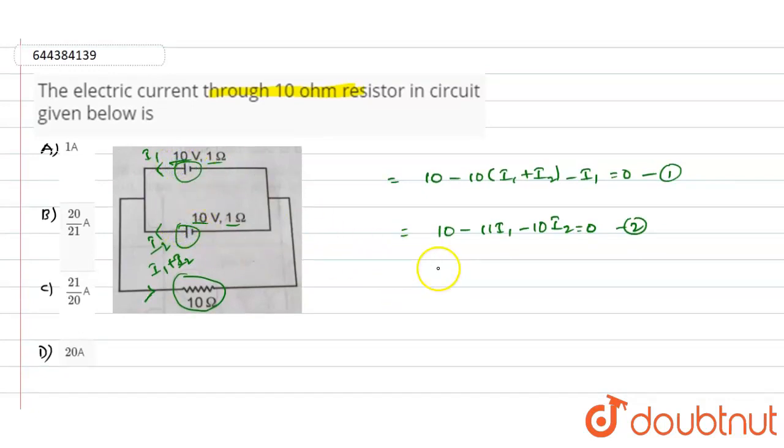Now I am considering the lower cell. Due to the lower cell we can write two equations again which is 10 minus 10 into (i1 plus i2) minus i2, so that will be equals to 0. And we will simplify this equation and write it as 10 minus 10 into i1 minus 11 into i2, so that will be equals to 0.